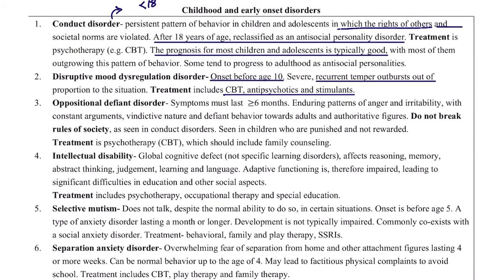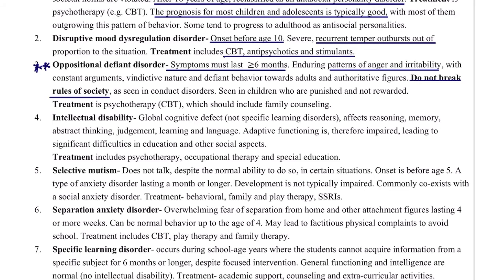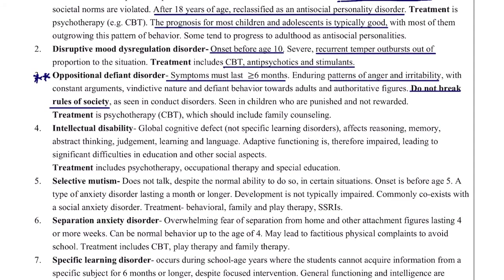Oppositional defiant disorder is very important for USMLE. Symptoms must last at least six months, with patterns of anger, irritability, constant arguing, taking revenge, and defiance toward adults and authoritative figures. Importantly, this does not cause the child to break societal rules — unlike conduct disorder, where the child breaks rules of society. ODD children are just very angry and defiant. Treatment is psychotherapy including family counseling.